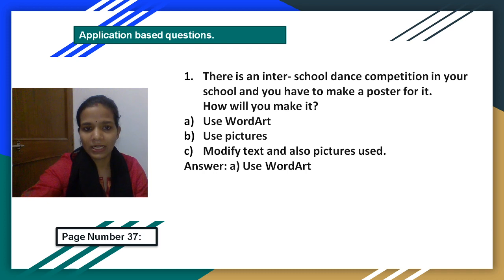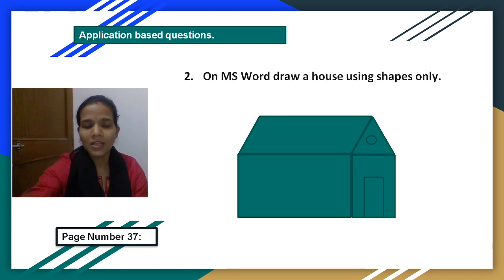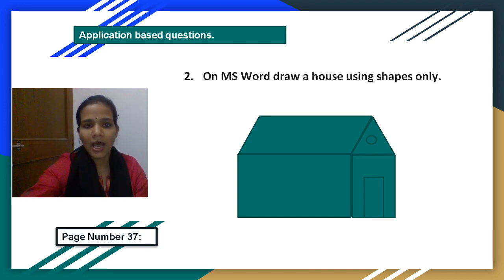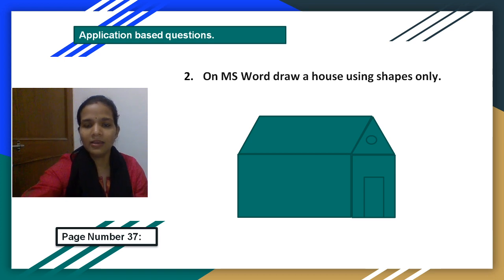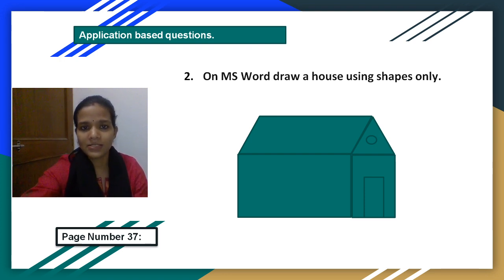Question number 2: On MS Word, draw a house using shapes only. Using MS Word, you have to make a house using the shapes available. I have made a sample house using MS Word — you will make something like this by using the shapes options given in MS Word.